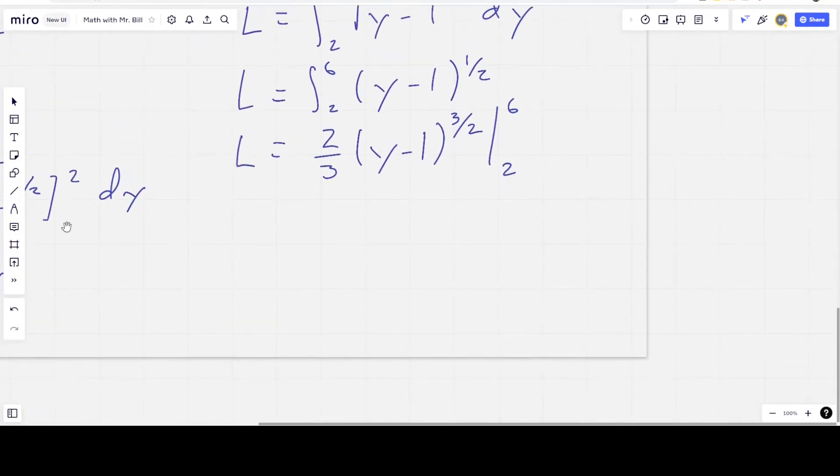Okay, so the answer is not going to be terribly pretty, but we'll get an answer. So L is equal to 2/3, and then plug in 6 first. 6 minus 1 is 5. So we get 5 to the 3/2.